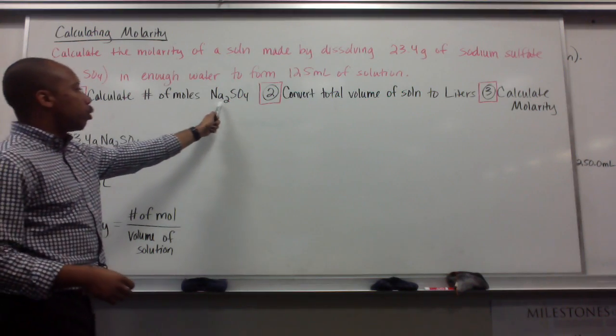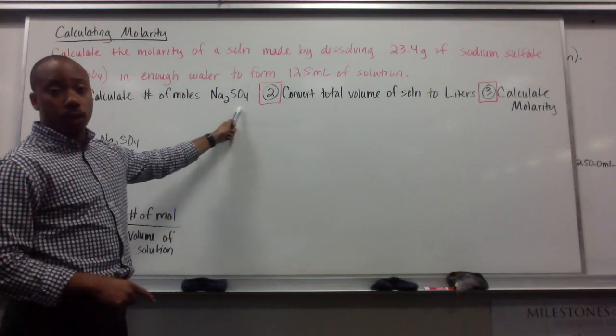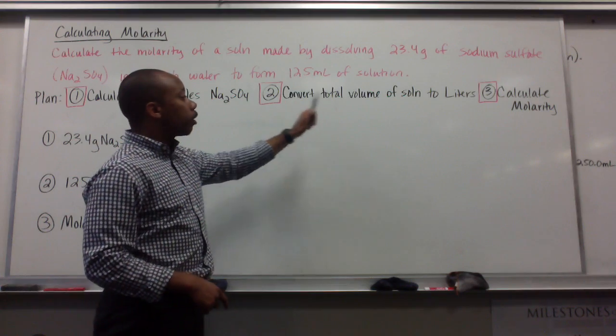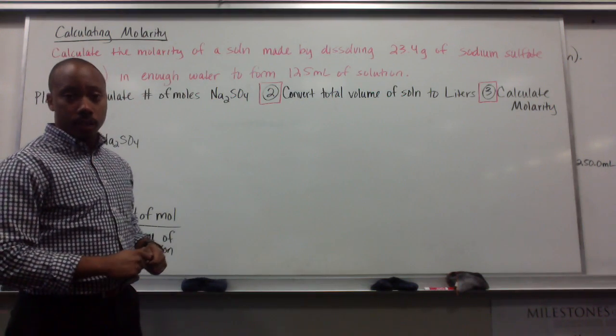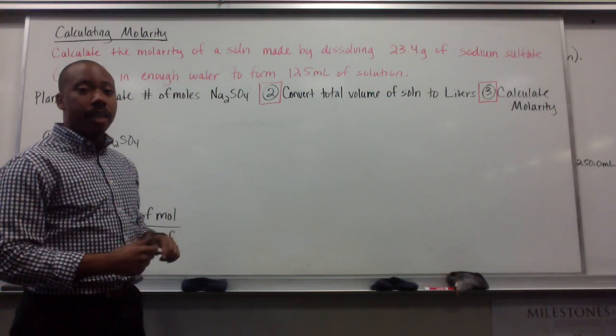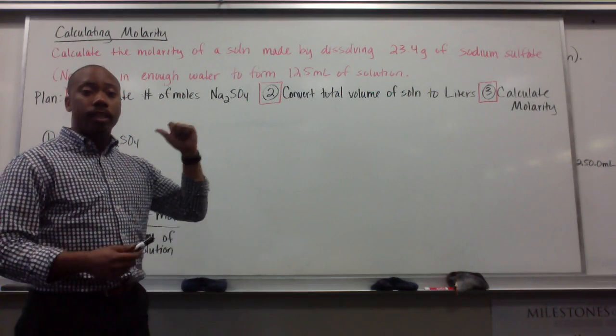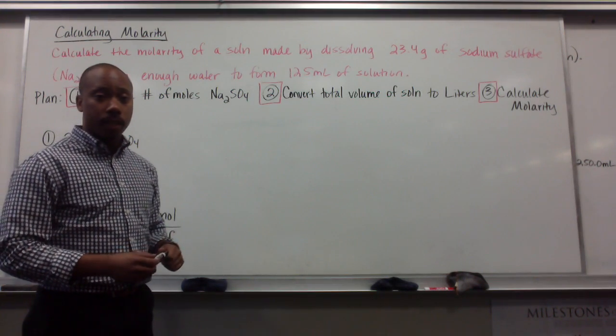First thing we do is make a plan. First, calculate the number of moles of sodium sulfate. Two, convert your total volume of solution to liters. And three, calculate the molarity using the equation that we saw on the last board.